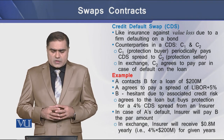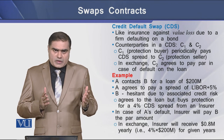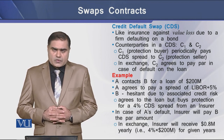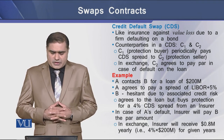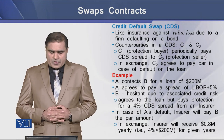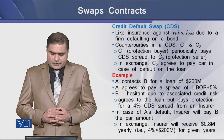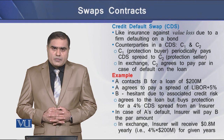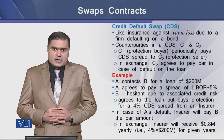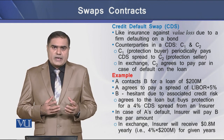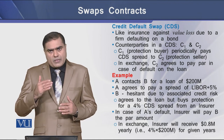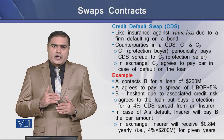Let's see an example of how a CDS works. Mr. A contracts Mr. B for a loan of $200 million, and A agrees to pay a spread of LIBOR plus 5%. B, the lender, is hesitant due to the associated credit risk, but agrees to the loan and buys protection with a 4% CDS spread from an insurer. In case of A's default, the insurer will pay B the par amount. In exchange, the insurer will receive $0.8 million per year, which is 4% of the $200 million loan amount, paid by lender B for the life of the debt.